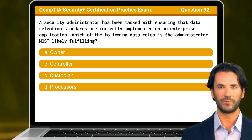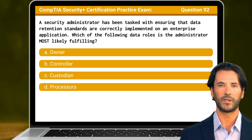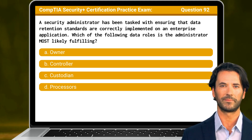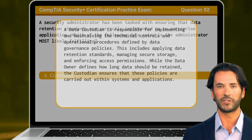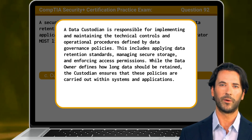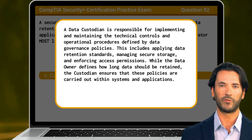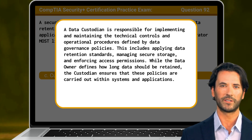Question 92: A security administrator has been tasked with ensuring that data retention standards are correctly implemented on an enterprise application. Which of the following data roles is the administrator most likely fulfilling? The answer is C, custodian. A data custodian is responsible for implementing and maintaining the technical controls and operational procedures defined by data governance policies. This includes applying data retention standards, managing secure storage, and enforcing access permissions. While the data owner defines how long data should be retained, the custodian ensures that these policies are carried out within systems and applications.